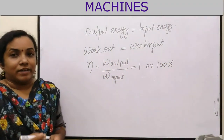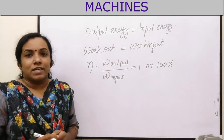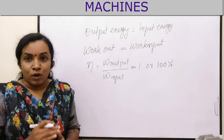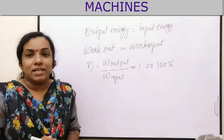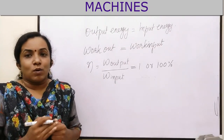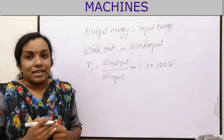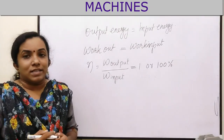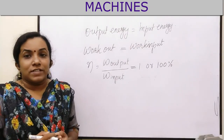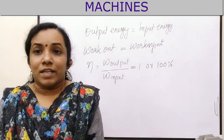So we can conclude: an ideal machine is a machine in which there is no loss of energy. Hence, work output is equal to work input and energy output is equal to energy input. Also, efficiency is 100%.